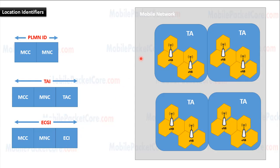In summary, the mobile LTE network contains several tracking areas, and every tracking area contains several cells. The mobile network is identified by the PLMN ID, which consists of the MCC and the MNC. The tracking area is identified locally by the Tracking Area Code (TAC), and globally by the Tracking Area Identity (TAI). Every cell is identified locally by the EUTRAN Cell Identifier (ECI), and globally by the EUTRAN Cell Global Identifier (ECGI).